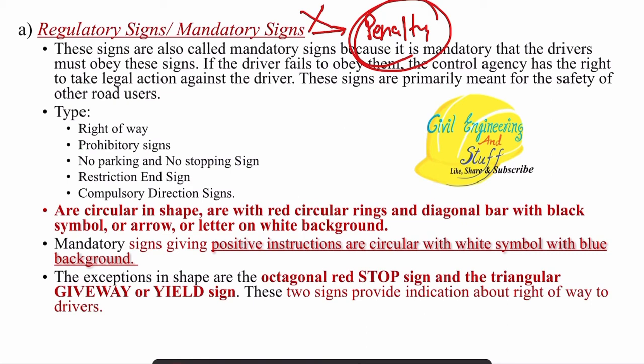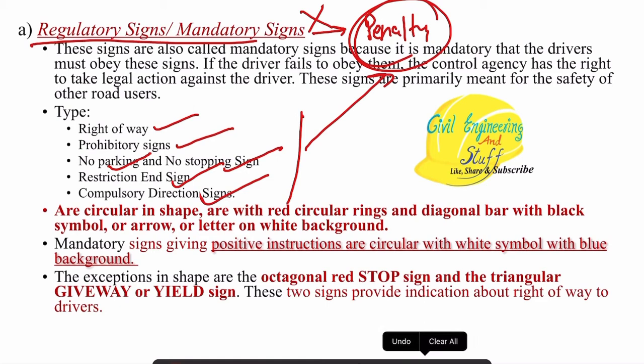Examples of regulatory signs include: right of way signs, prohibitory signs, no parking signs, no stopping signs, restriction end signs, and compulsory direction signs. If you do not follow any of these, you will be penalized. These are strictly to follow.